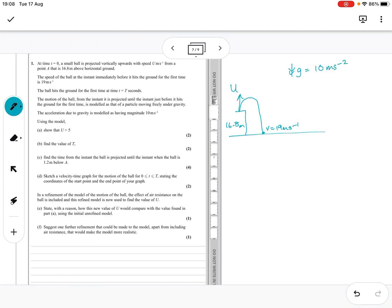So basically we know this is a SUVAT, the ball hits the ground at time t seconds. The motion of the ball at the instant projected hits the ground, first time this model is a particle moving freely under gravity, which means it has the point of its mass, it doesn't rotate, and air resistance doesn't count if it's a particle moving freely. So the acceleration due to gravity is a magnitude of that.